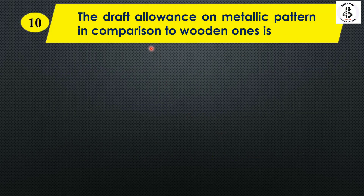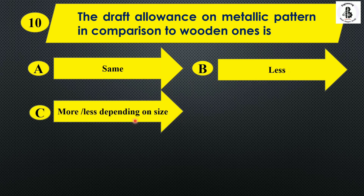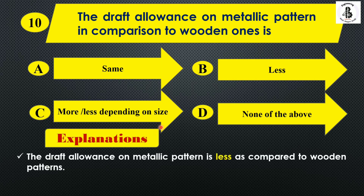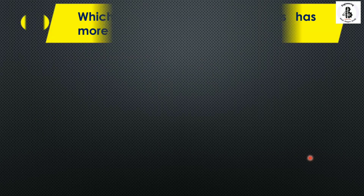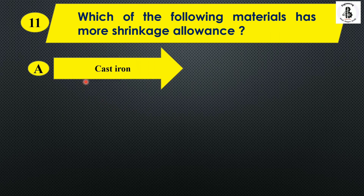The next question: the draft allowance on metallic pattern as compared to wooden patterns is — option A: same; option B: less; option C: more; option D: none of the above. The draft allowance on metallic patterns is less compared to wooden patterns, because wooden patterns have dimensional inaccuracy when moisture is present. So the right answer is option B: less.